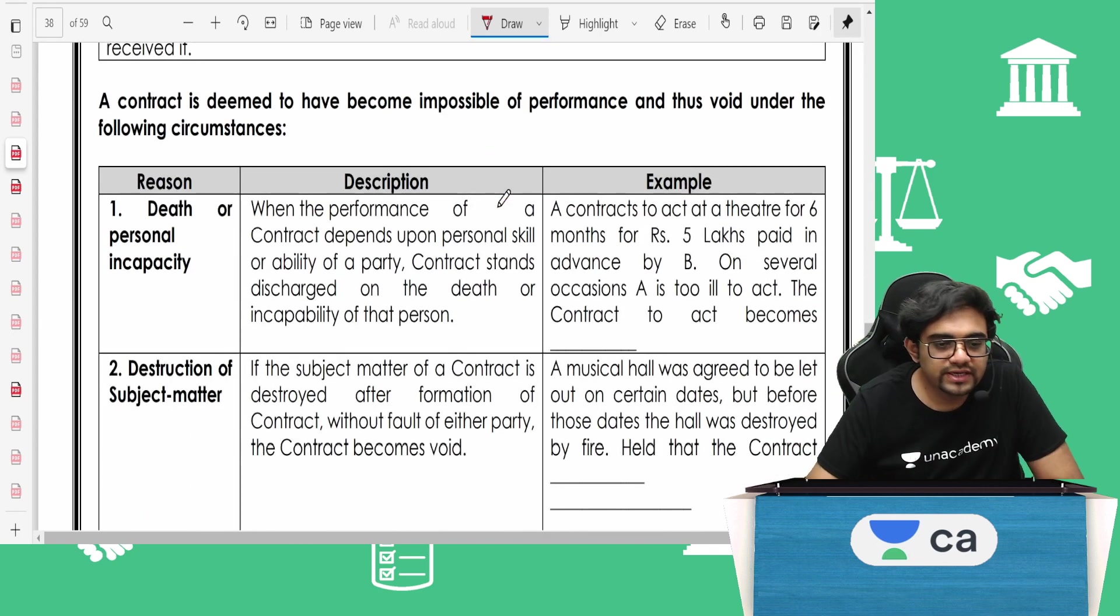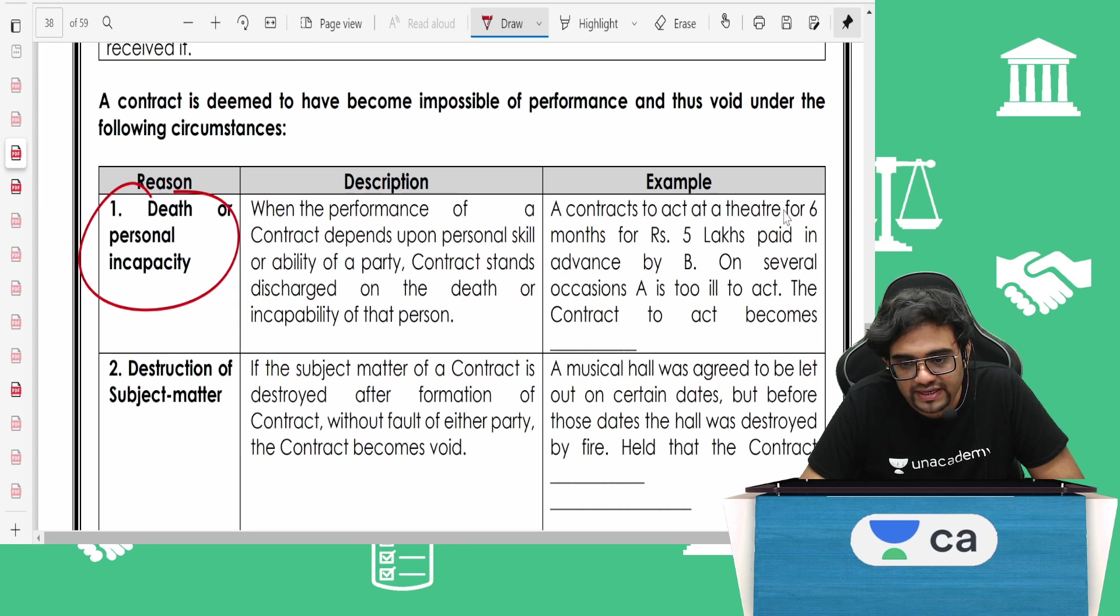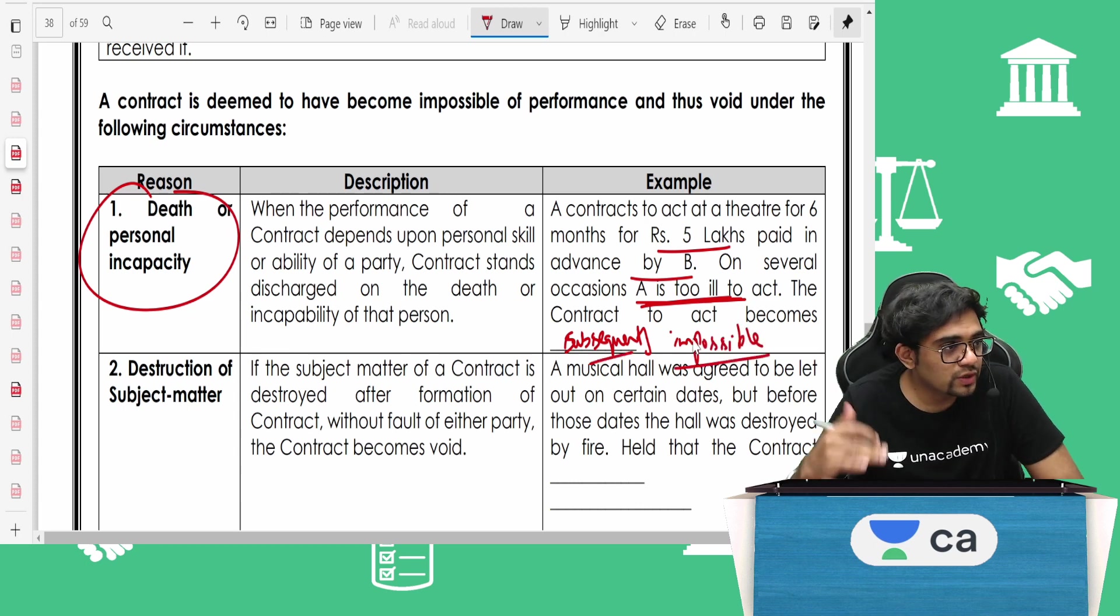For example, death or personal incapacity. A contracts to act at a theatre for six months for five lakh rupees paid in advance by B. On several occasions A is too ill to act. The contract to act becomes subsequently impossible. Initially it was valid, later it becomes void, subsequently impossible.